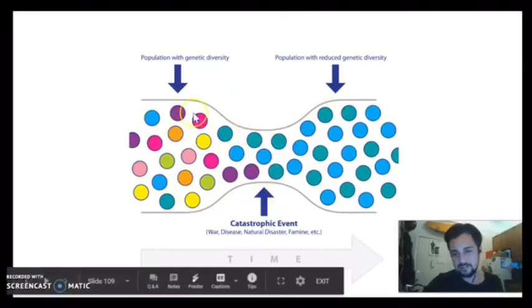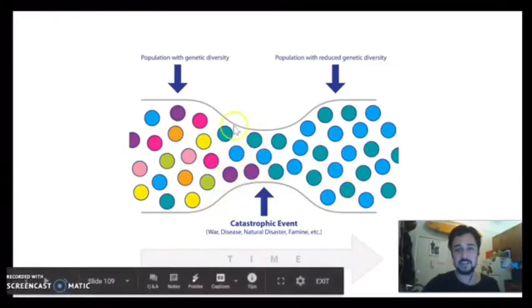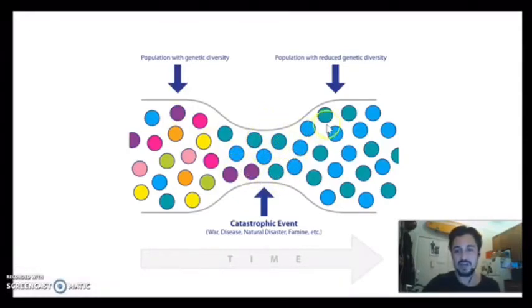And so this is called a bottleneck event. And this happens a lot when you have a species that gets very, very endangered. And let's say they only have five of the species left. And then they have to re-establish the population from those five individuals. Well, then you have a bottleneck event of genetic diversity. And all of the species that stem from those original five will have limited genetic diversity because they went through that period of time. So you might have a big population afterwards, but they're all genetically very similar. That does happen.